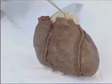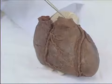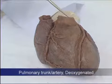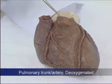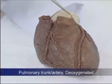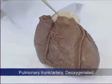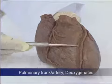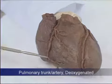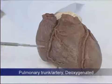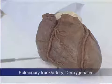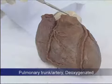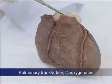Answer number eight: this is the pulmonary trunk; it contains deoxygenated blood. We can see the right atrium on the anterior surface of the heart, the coronary sulcus, the anterior interventricular sulcus, and here is the pulmonary trunk.